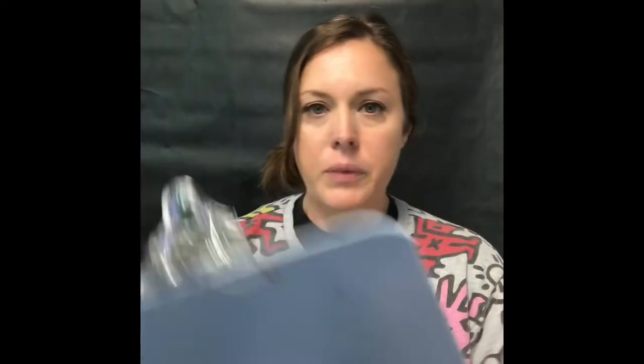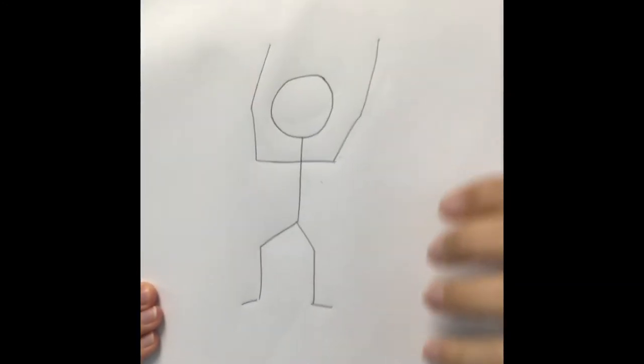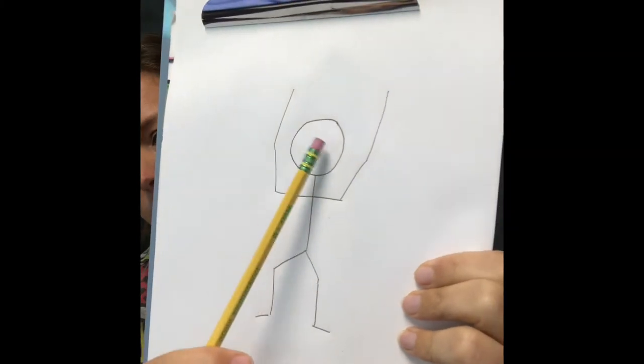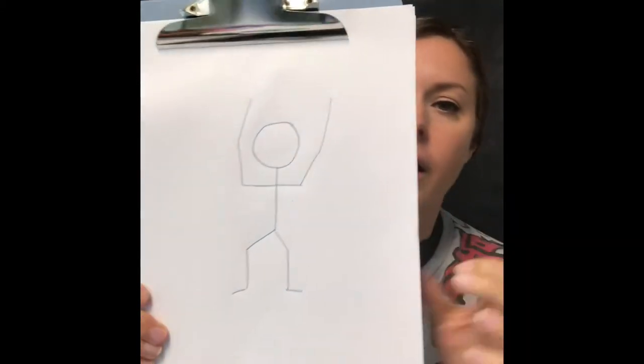We'll start with a pencil and a scratch sheet of paper. We'll make a basic stick figure. With the pencil, I'll start with a circle for the face, then a line underneath — it kind of looks like a balloon right now. Then we'll give our stick figure two legs and feet, and then some arms, just like that. Notice we're not going to add eyes or a mouth, because Keith Haring did not include eyes or a mouth in his figures.